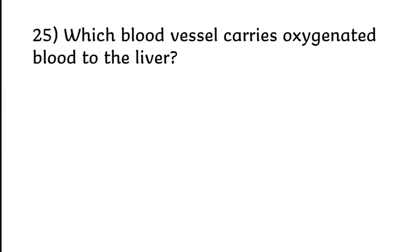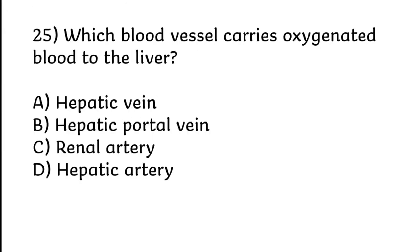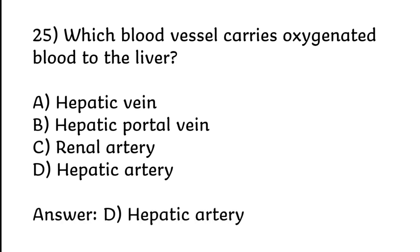Which blood vessel carries oxygenated blood to the liver? A) Hepatic vein, B) Hepatic portal vein, C) Renal artery, D) Hepatic artery. Correct answer is option D: Hepatic artery.